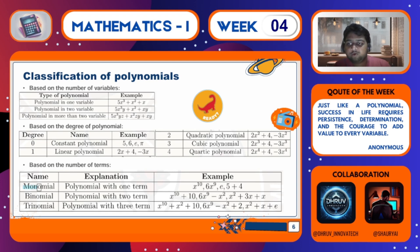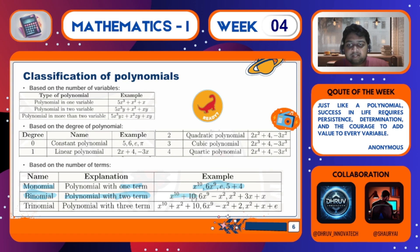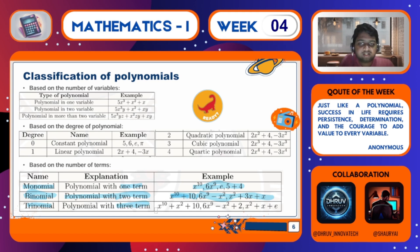Then classification based on number of terms: a monomial has one term present, like x³, x¹⁰, or 5 — one number, constant or variable is present. Then comes the binomial, where two terms are present — a variable and a constant, like x¹⁰ + 10, or 6x⁹ − 6x². Then the trinomial, where three terms are present — it can be constants, variables or exponential constants. Three terms should be present, like x² + x + e, where the first two terms are variables and the third is a constant.